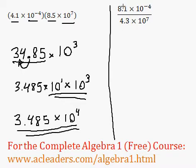What about this question? Now we're dividing. So that's going to be pretty similar. We have 8.1 divided by 4.3, which is 1.88. I'm just going to go for two decimal places here.